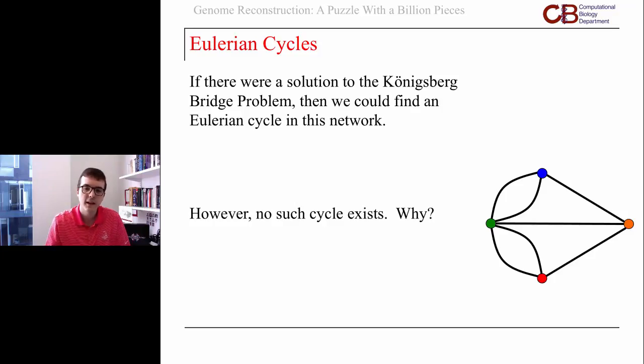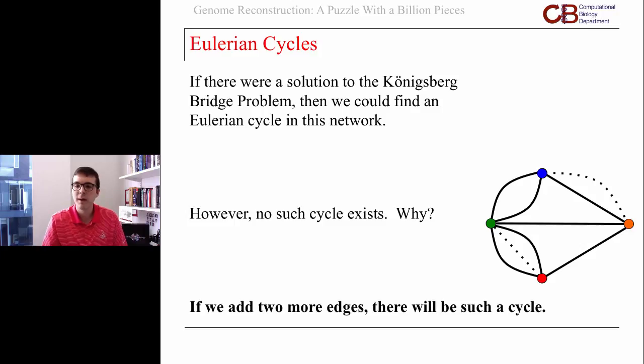We can generalize this idea: each node cannot have an odd number of edges connected to it. For example, we can make this network have an Eulerian cycle if we add a couple of edges. Now the number of edges touching each node is even instead of odd. Here's the cycle: we start at blue, go to orange, walk around the outside of the network, then to orange, to green, down to red, back up to green. We've got one edge left, and it leads us back to our starting node at blue.